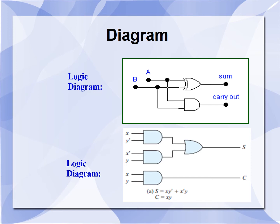X and Y are the inputs. The output of X XOR Y is equal to XY complement plus X complement Y. The outputs of these two AND gates are fed to the OR gate to produce the sum. Similarly, the same two inputs are also fed to the AND gate to produce the carry.